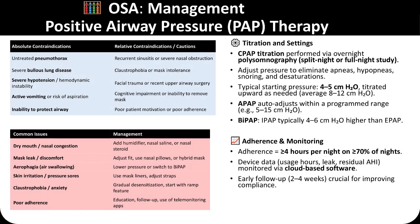Positive airway pressure therapy requires proper titration, adherence, and monitoring to achieve optimal outcomes. Absolute contraindications include untreated pneumothorax, severe bullous lung disease, hemodynamic instability, active vomiting, and inability to protect the airway, while relative cautions include nasal obstruction, claustrophobia, recent upper airway surgery, cognitive impairment, or poor motivation. CPAP titration is performed during overnight polysomnography, with pressures typically starting at 4–5 cm H₂O and adjusted upward to eliminate apneas, snoring, and desaturation, averaging 8–12 cm H₂O.